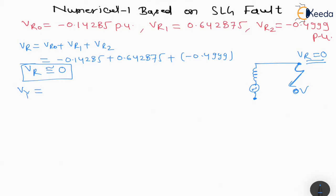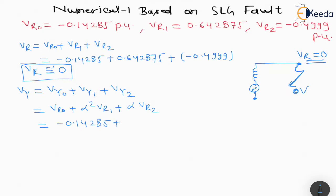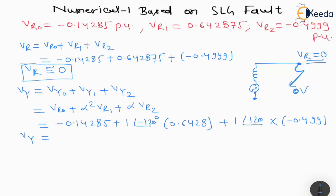Now we find Vy = Vy0 + Vy1 + Vy2, where Vy0 = Vr0, Vy1 = α²·Vr1, Vy2 = α·Vr2. So Vy = (-0.14285) + 1∠-120° × 0.6428 + 1∠120° × (-0.499). This gives Vy = -0.2142 - J0.9896 per unit.